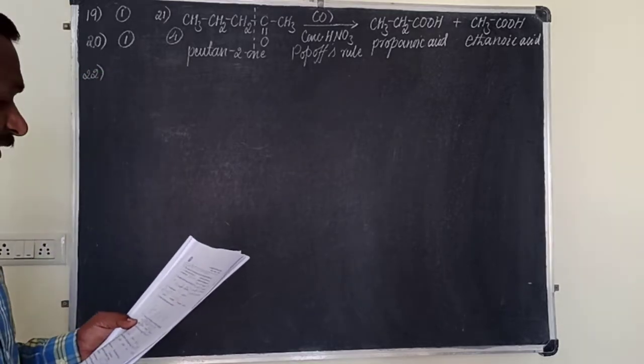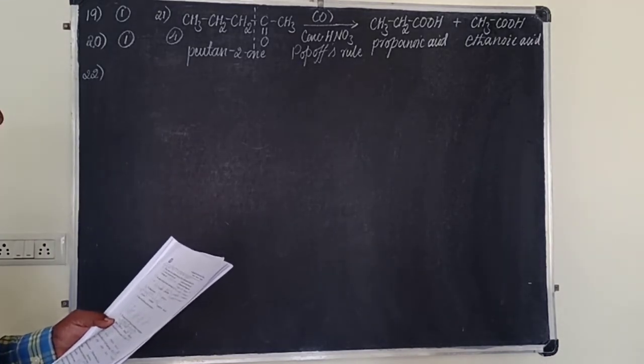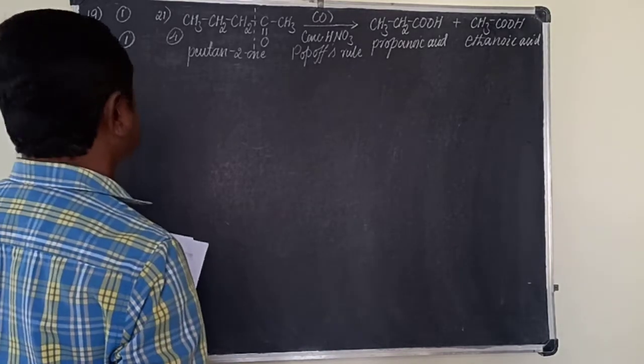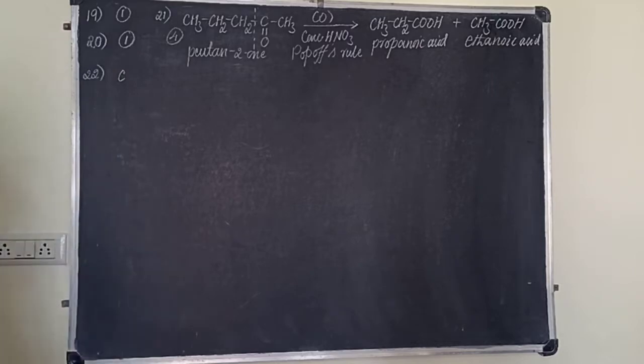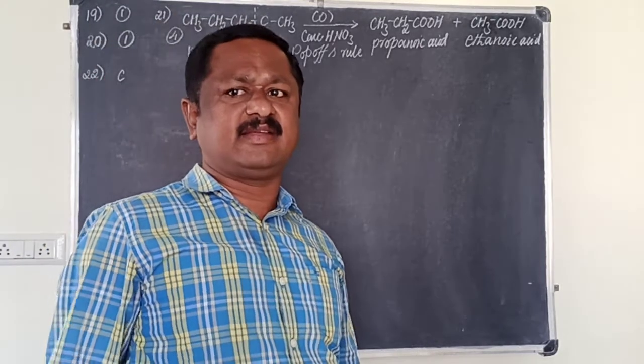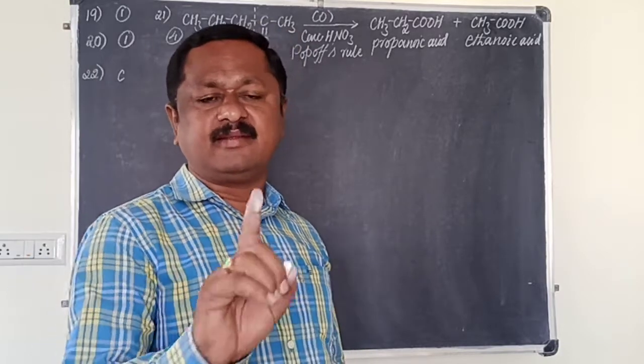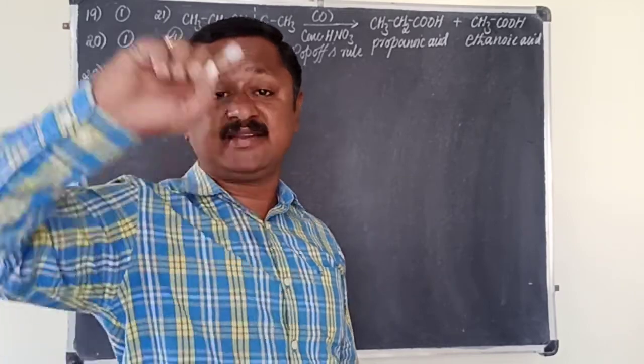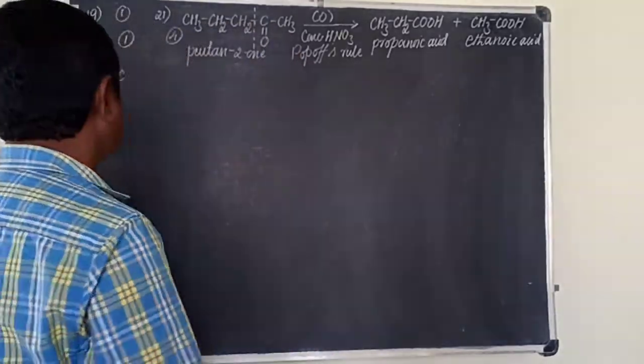Question 22. The number of isomeric ketones with a molecular formula C6H12O. C6H12O, six carbon atoms. The keto group, the C=O group, cannot be present at the terminal carbon, only at the middle of the carbon. Six carbon atoms.